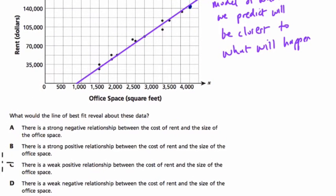So here, let's read through these choices. A, there is a strong negative relationship between the cost of rent and the size of office space. A negative relationship, negative correlation, is essentially the same thing as a negative slope. That would mean as X goes up, Y goes down. It's not that negative is necessarily one is going up or down. It's just that they're going in opposite ways.